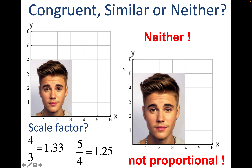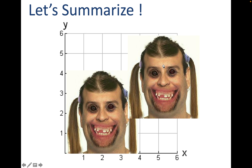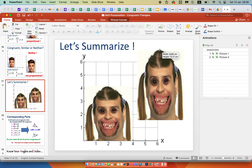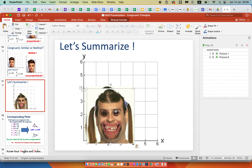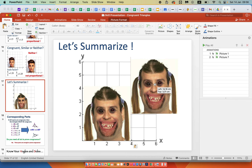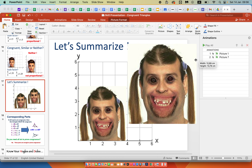Let's recap the idea of proportionality using images. Right now they're congruent — exactly the same size. If I grab one side and grow it only that way, it's out of proportion — that length grew by some scale factor but the other didn't. That's not similar. Now starting again with congruent images: if I pull only one side, it's out of proportion again — one side grew more than the other, so it's not proportional and not similar. But if I grab the corner, both sides grow by the same scale factor. It remains in proportion — therefore, it is similar.